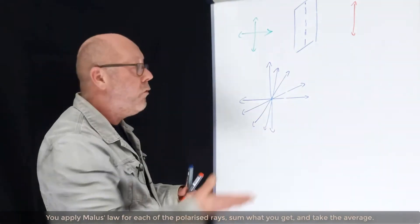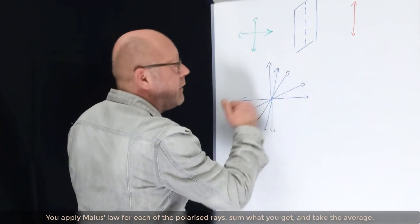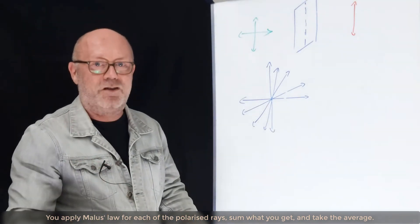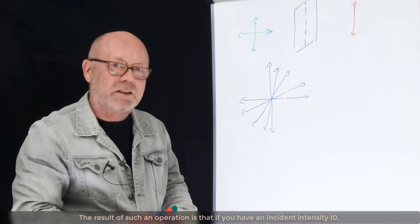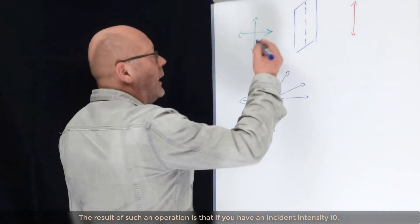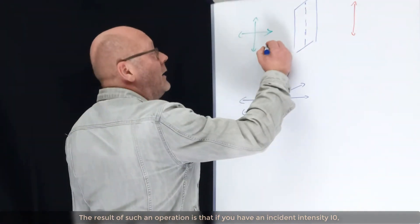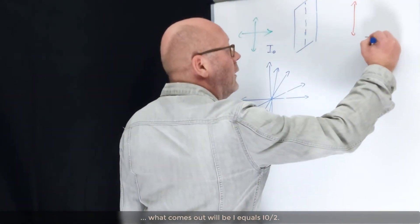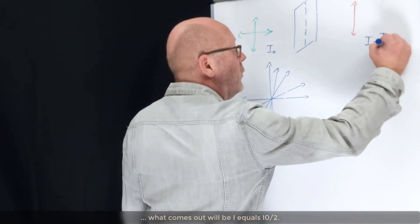What about the intensity? Well, you can consider each of the contributions, right? You apply Malus's law for each of these polarized rays, sum of what you get, and then take the average. The result of such an operation is that if you have an incident intensity which is I0, what comes out will be I equals I0 over 2. Basically, the intensity is cut in half.